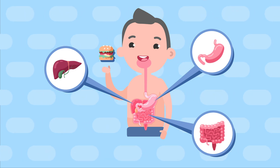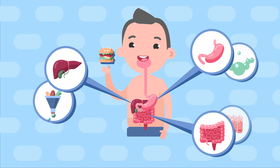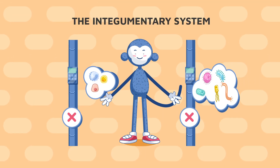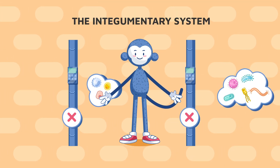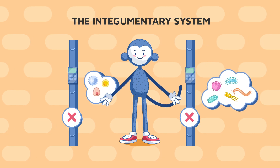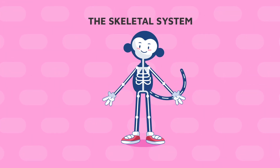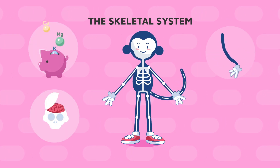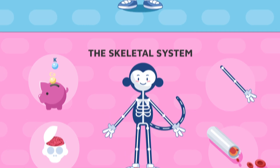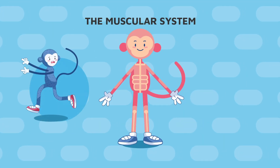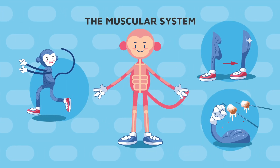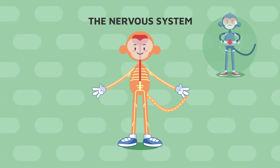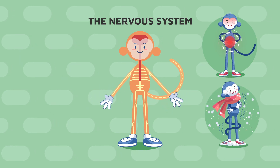Each system performs vital life functions that are similar within all species. The integumentary system separates and protects the internal environment from the external. The skeletal system supports an organism's form, protects soft tissues, stores minerals, and forms blood. The muscular system moves, supports, and generates heat for the organism. The nervous system senses both the inside and outside environment and reacts to stimuli.